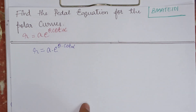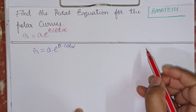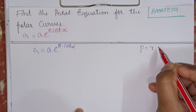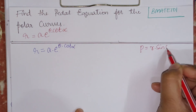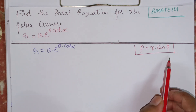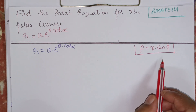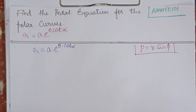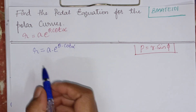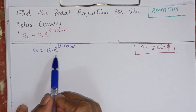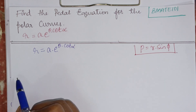I will write down the pedal equation here. The pedal equation is P equals R into sine phi. This is the pedal equation. If you want the derivation of the pedal equation, just put it in the comment section. I will get back with the proper explanation of that pedal equation derivation. For now, we will be finding the pedal equation for this polar curve.